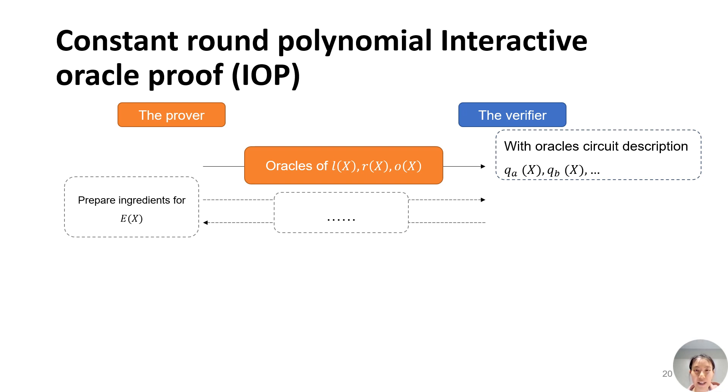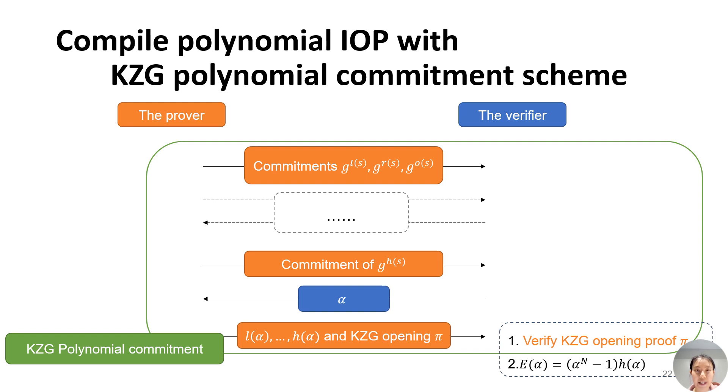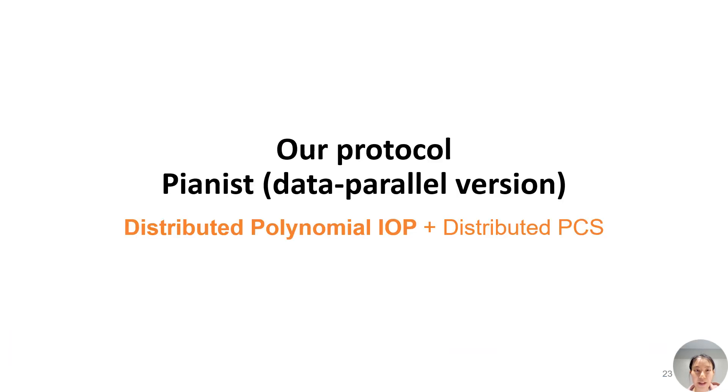The whole protocol is as follows. First, the prover provides the oracles of polynomials L, R, O, etc. to the verifier. Then, it computes the witness H(X) to prove the divisibility and sends its oracle to the verifier. The oracles help the verifier ask for evaluations and verify the polynomial identity. The protocol with oracles is called the IOP protocol. In practice, the oracle can be instantiated by a polynomial commitment scheme or PCS. The choice in Plonk is KZG protocol.